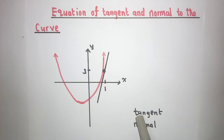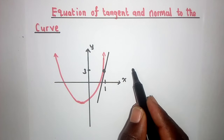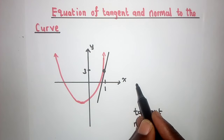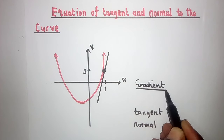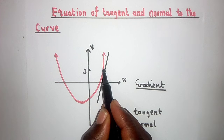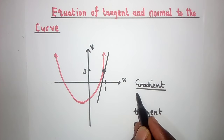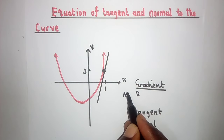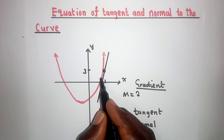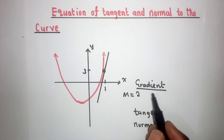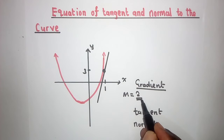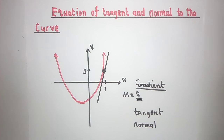Now when we talk about the gradient — the slope of the curve here — if it is 2, this is the gradient. If the gradient is 2 at this point, the gradient of the curve at this point is 2, and even for the tangent line it will just be the same — it will still be 2.